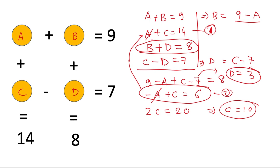Next, a plus c is 14. c is 10. So a plus 10 is 14, which means a is 4. And finally a plus b is 9. So 4 plus b is 9, which means b is 5.